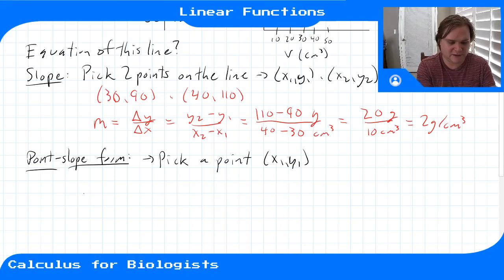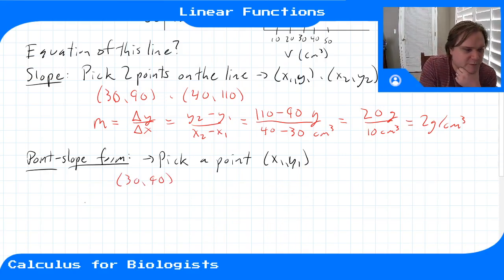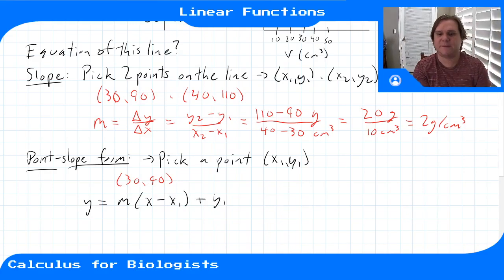So for our example, again, we're gonna just use our first one. So it's 30, 90. And then point-slope form, remember, is y equals m, x minus your x-point, plus your y-point.